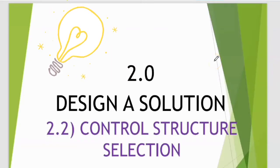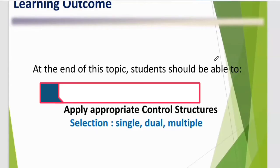Hi everyone. Today we will continue to discuss the topic: design a solution for the second part, control structure selection. At the end of this topic, our students should be able to apply appropriate control structures. For selection, we have three types: single, dual, and multiple.